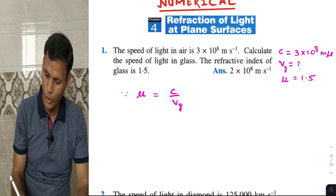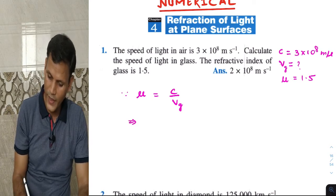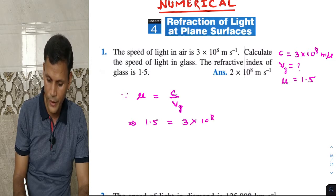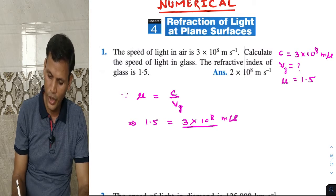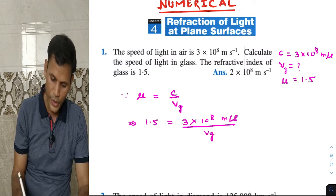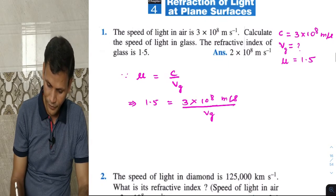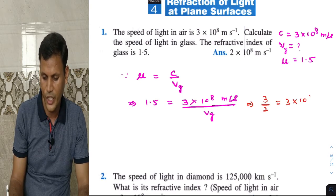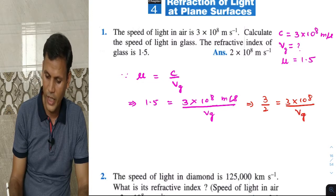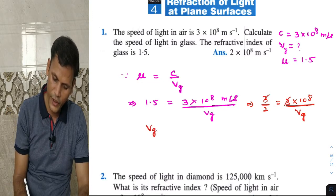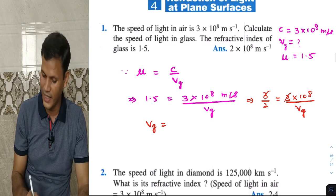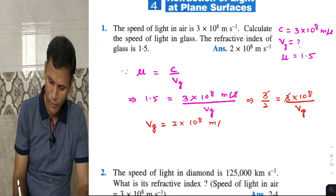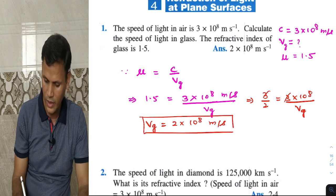Both values are given. So mu is 1.5 equals c, which is 3 into 10 raise to 8, upon v_g. Writing 1.5 as 3 by 2: 3 by 2 equals 3 into 10 raise to 8 upon v_g. The 3s cancel, so the velocity of light in glass is 2 into 10 raise to 8 meter per second. This sum is over.